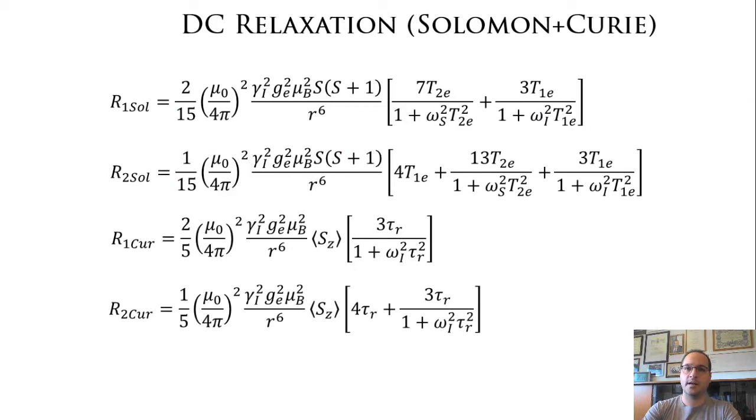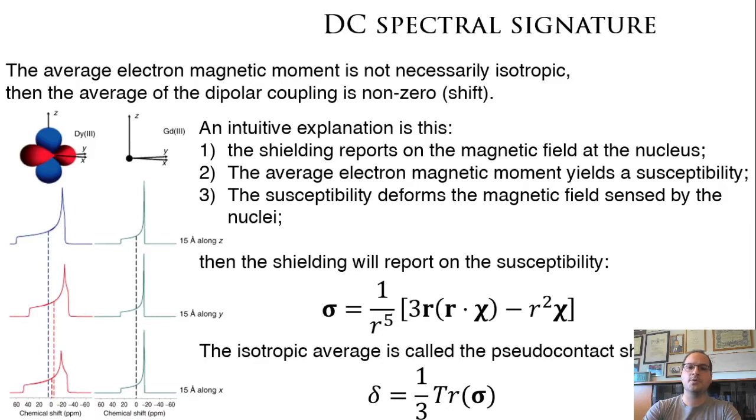However, this is not the whole story, because the average magnetic moment is not necessarily isotropic if you have a dequenched orbital momentum.